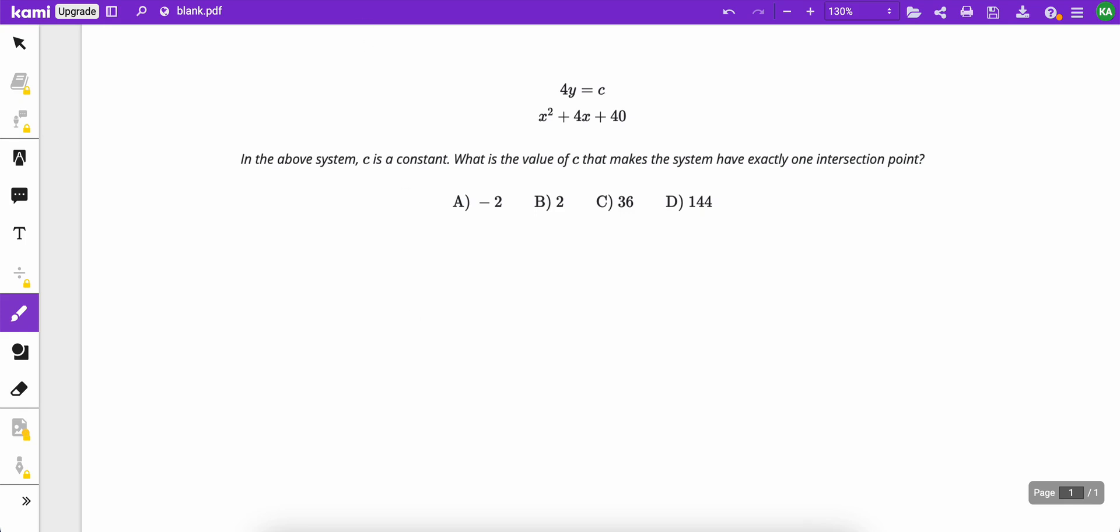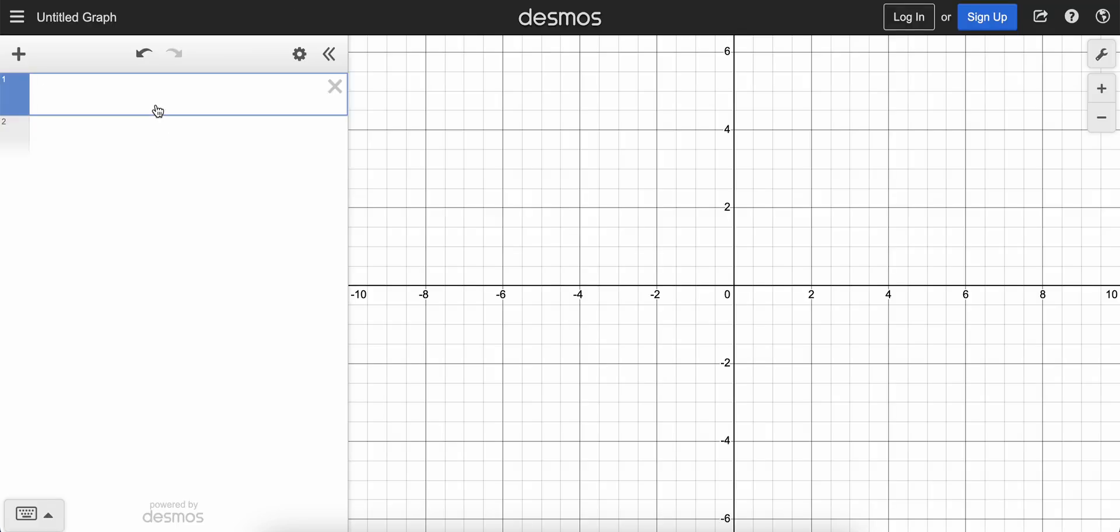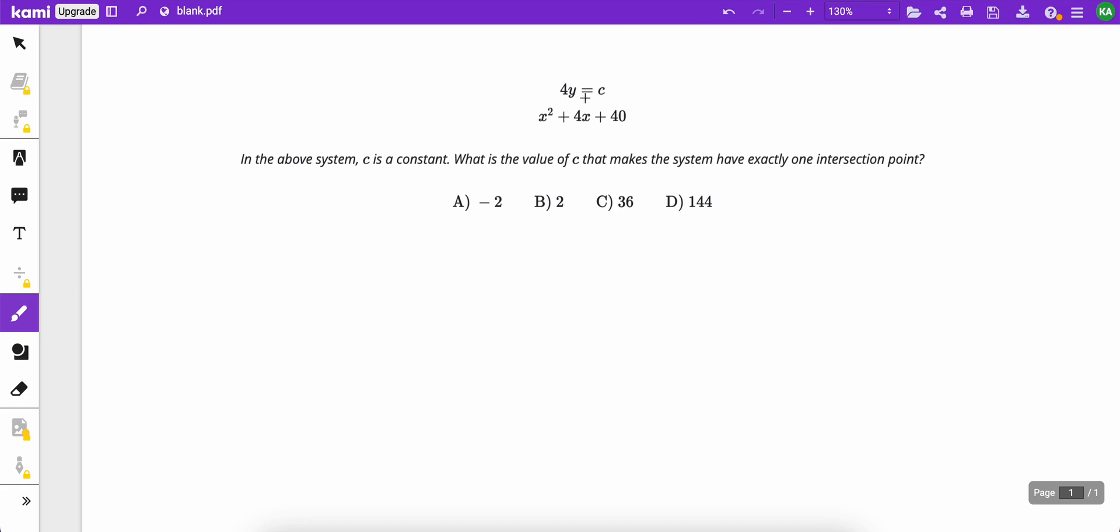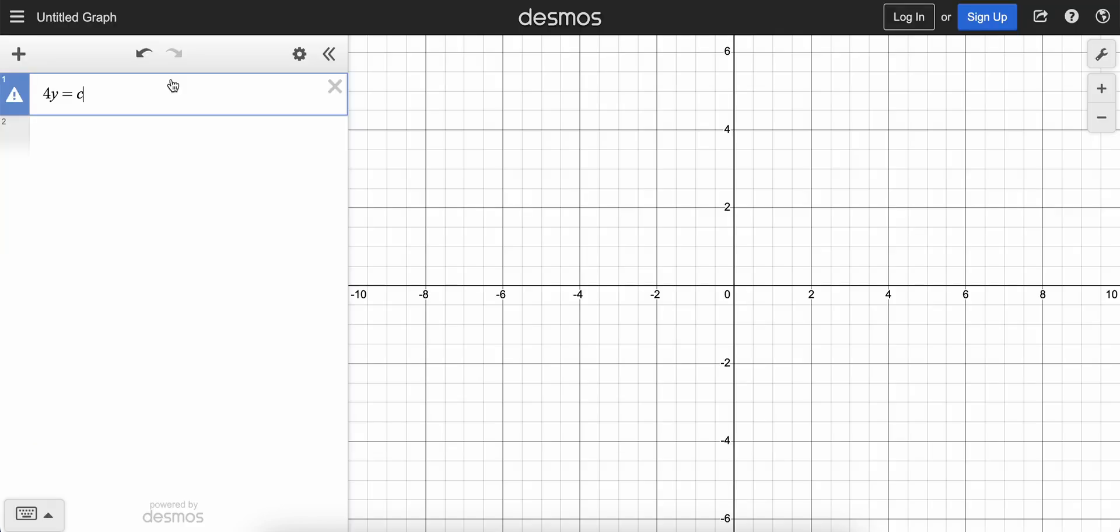So how are we going to do this? Well, we can start by just typing these in. 4y is equal to c, and we can already see there's an issue here. We'll talk about that in a second.